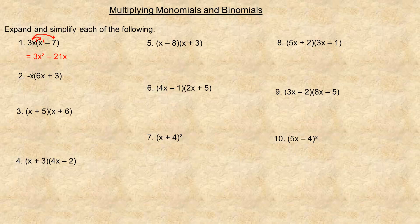In number two, we distribute the negative x into the brackets, multiplying by 6x to get minus 6x squared — there's really a negative 1 here, and x times x is x squared. Then negative x times 3 is minus 3x. Again, those are not like terms, so we cannot combine or add them.